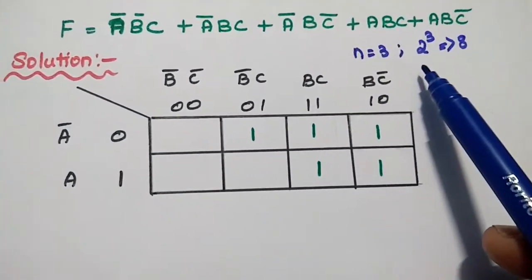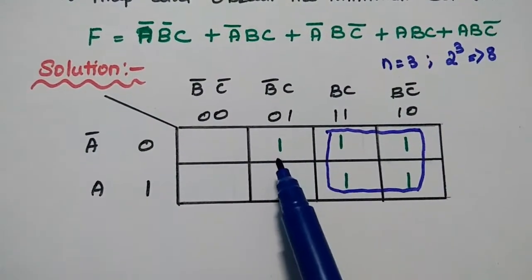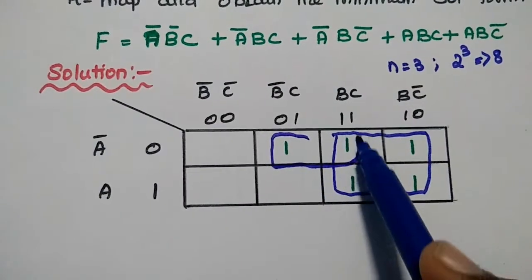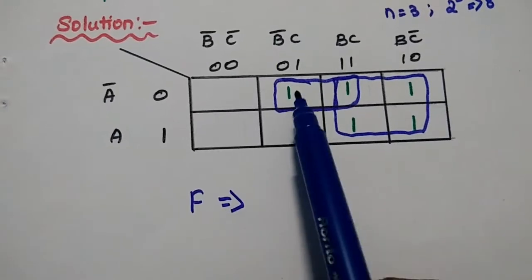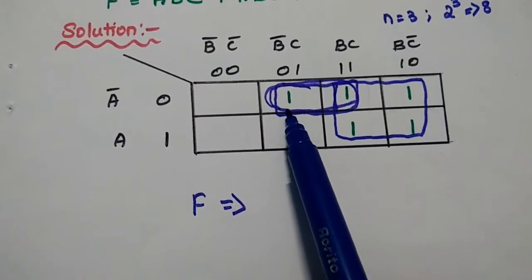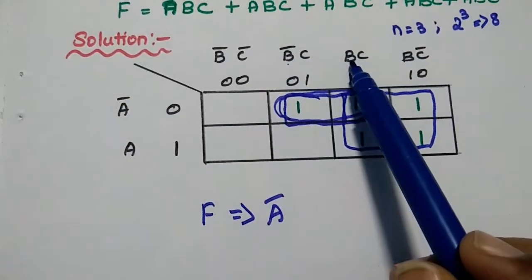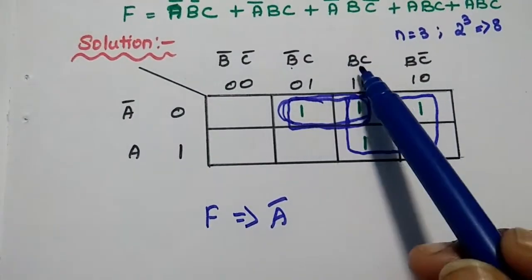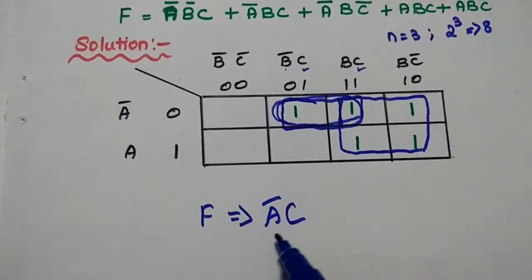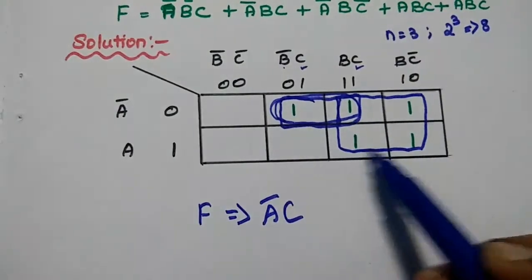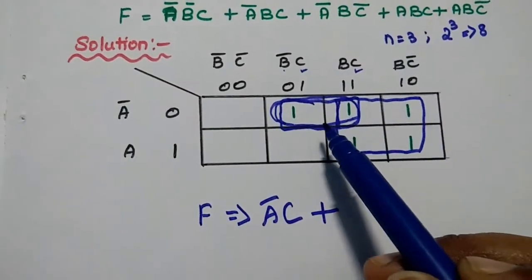The next step is to group the 1s. Here we have four 1s together, so we make a group of 4. There is also one lone 1, so we make another group of 2 — overlapping is allowed. So we have 2 groups. For the group of 4, what is the common row value? It is A̅. For the columns, B̅ and B cancel (B̅ + B = 1), so we consider only C. This group is represented as A̅C.